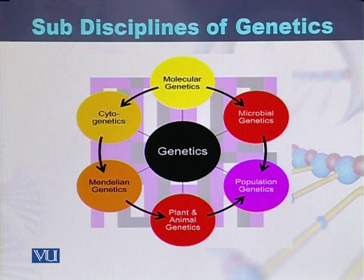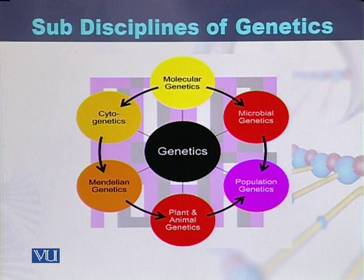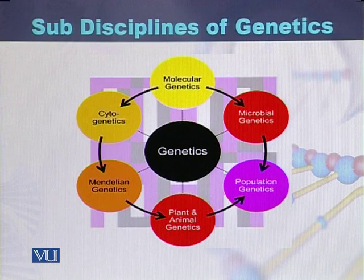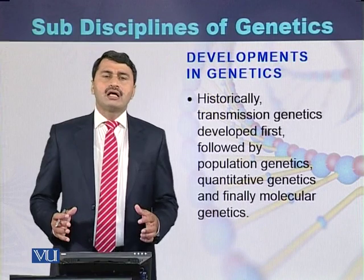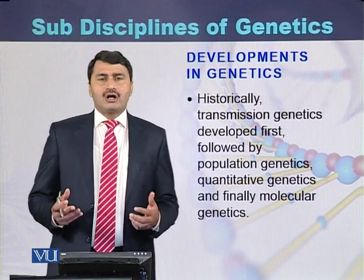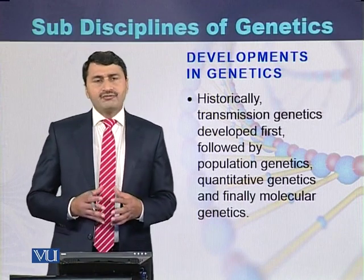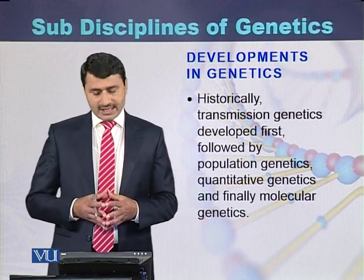Population genetics involves studying the genetics of a specific population or the people present in a particular area. If we study the genetics of microbes — like bacteria or viruses — then this category of genetics is called microbial genetics. These are all subdivisions or sub-categories of genetics.